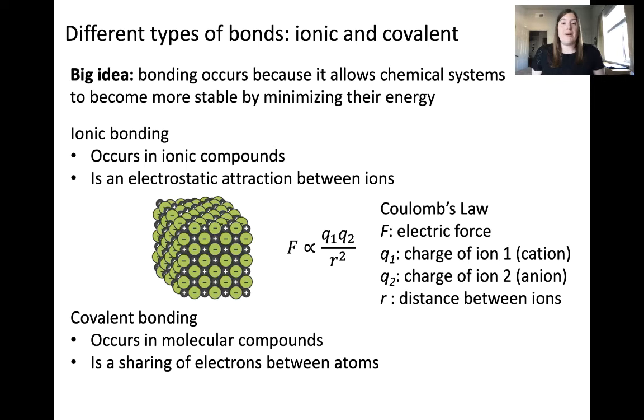The other primary type of bonding is covalent bonding, which occurs in molecular compounds. Covalent bonding is a sharing of electrons between atoms. Just to remind you, in a molecular compound, you have only neutrally charged atoms, not ions.